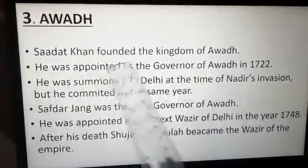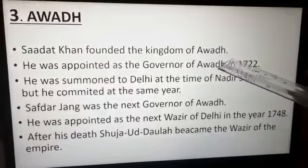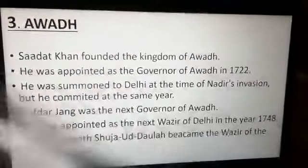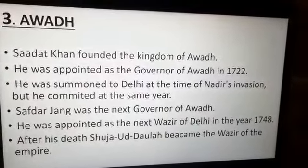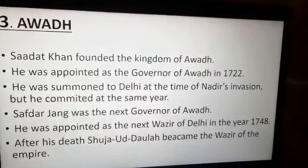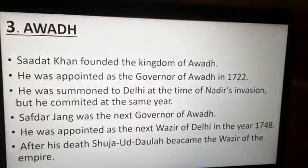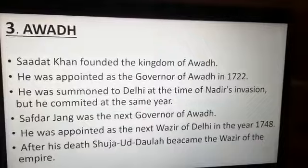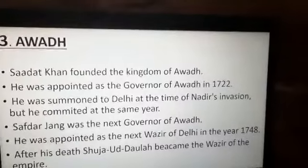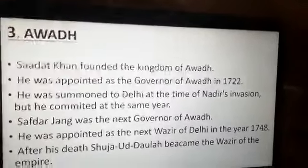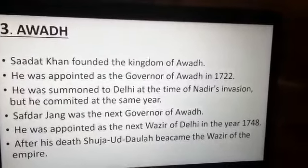Coming to Awad, Sadat Khan founded the Kingdom of Awad. He was appointed as the Governor of Awad in 1722 by the Mughal Emperor Muhammad Shah and soon rose to fame and power for his intelligence and courage. He was succeeded by his son-in-law Safdarjung. The rulers of Awad tried to improve financial resources and bring peace to the region. Under Safdarjung, there was peace and prosperity for a long time, and art and literature also flourished. After his death, Shuja ud-Daulah became the Wazir of the Empire.